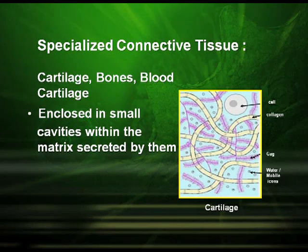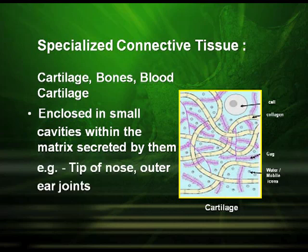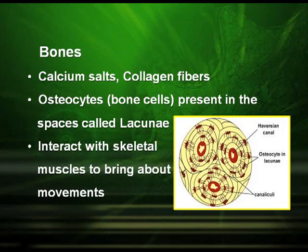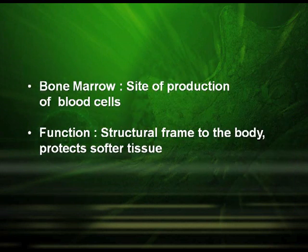Cartilage tissues are enclosed in small cavities within the matrix secreted by them, and are found in the tip of the nose and the external ear. Bones are made up of calcium salts and collagen fibers. They are made up of bone cells known as osteocytes, which are present in spaces called lacunae. Bones interact with skeletal muscles to bring about movements, and the bone marrow is the site of production of blood cells. Their function is to give structural frame to the body and protect softer tissues.